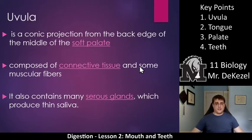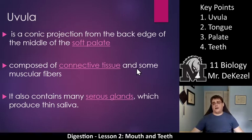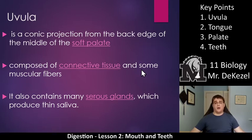So the uvula. The uvula is a conic projection from the back edge of the middle of the soft palate. It is the little dangly thing. It doesn't really do much. It's composed of some connective tissue and some muscular fibers. It wiggles around, it may trigger the gag reflex. It has a bunch of serous glands which produce saliva — essentially, they keep it moist. But you have lots of glands that do that in your mouth.